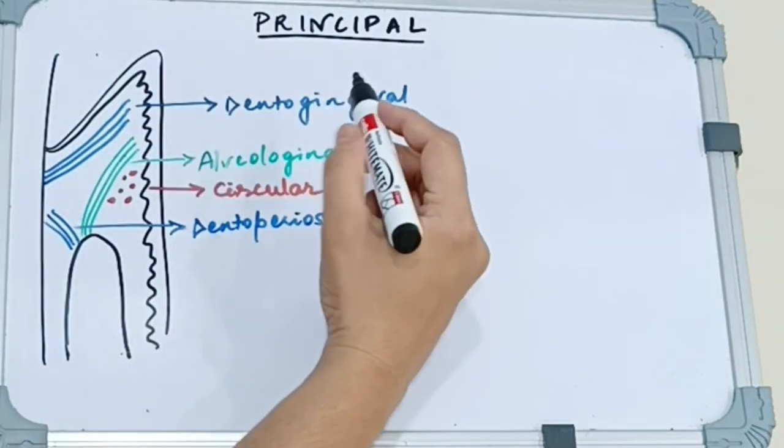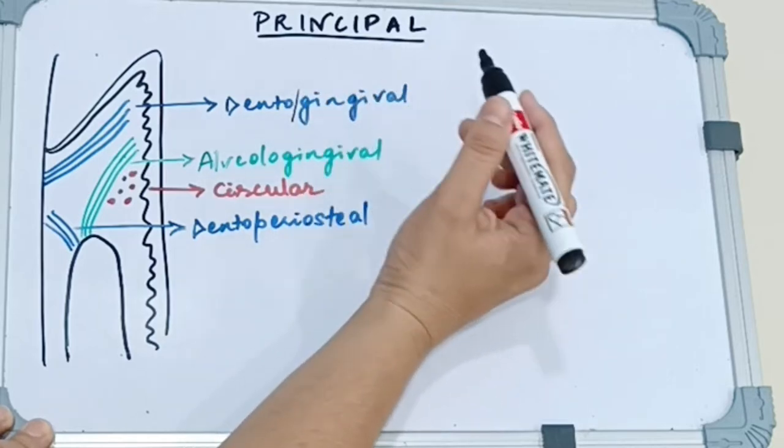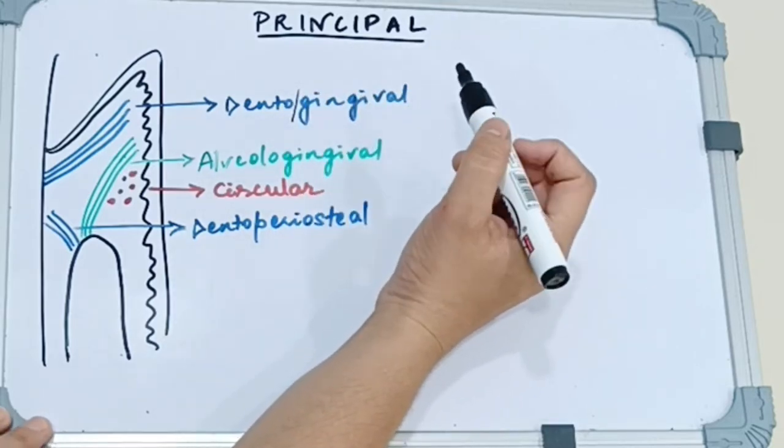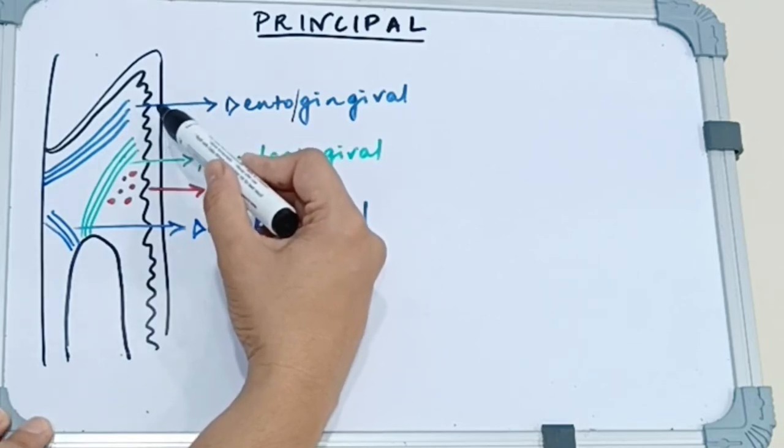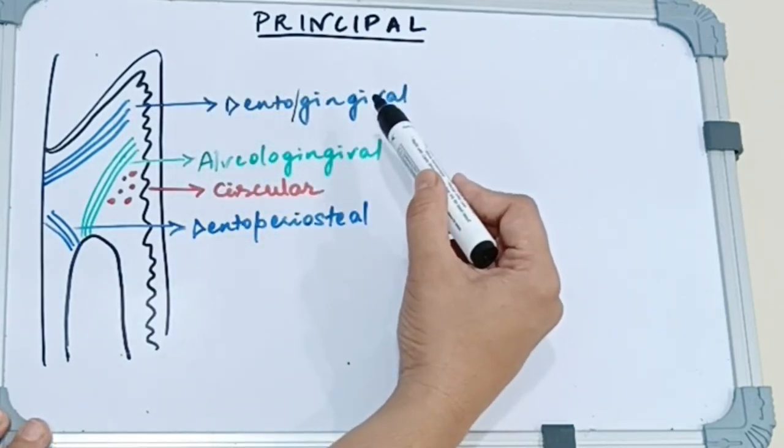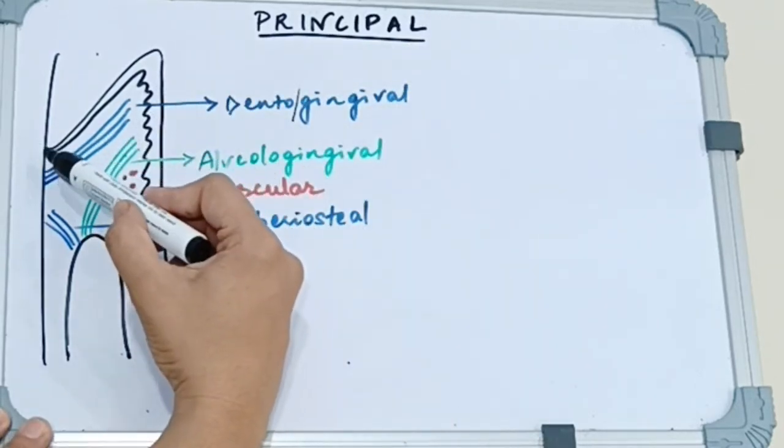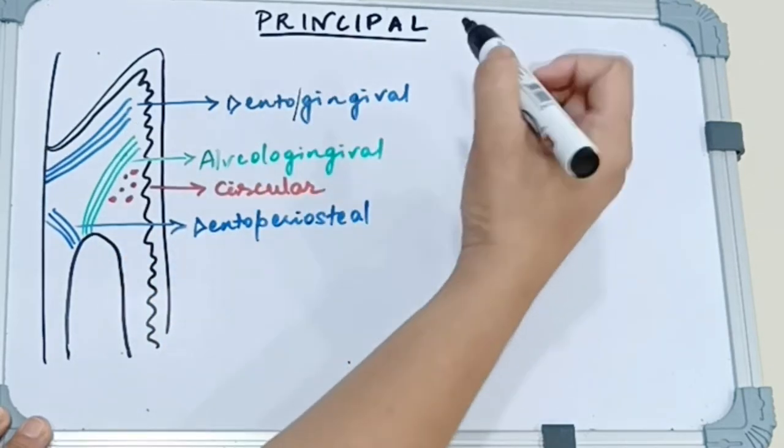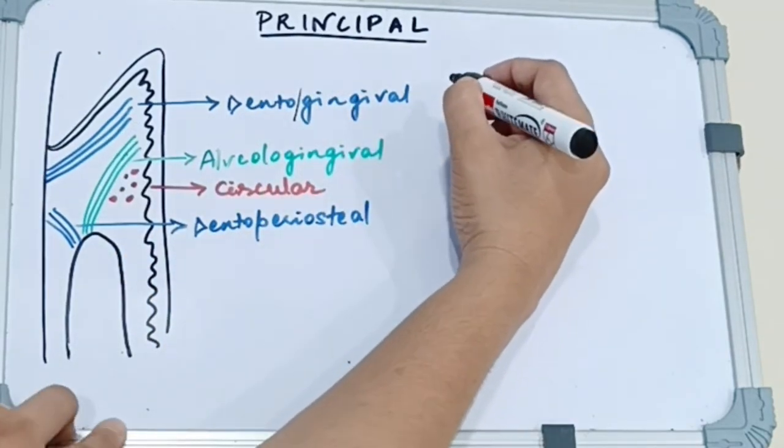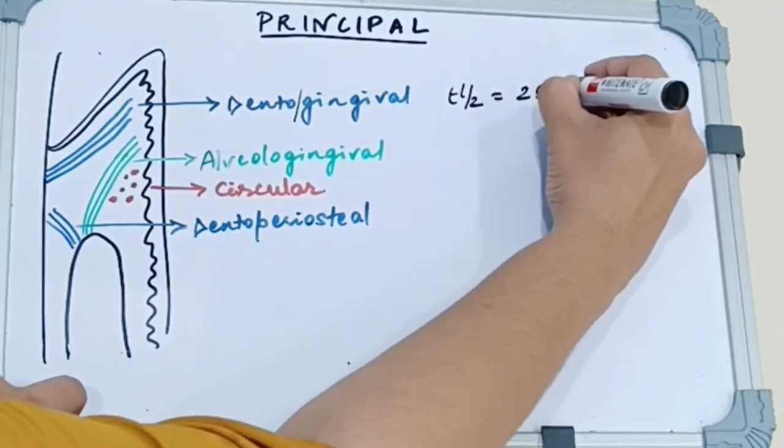So we first have the dentogingival. As the name suggests, these fibers provide a connection between the tooth and the gingiva. They are present on the buccal and the lingual and proximal surface and they are embedded in the cementum just beneath the epithelium at the base of the sulcus. So what they do is they provide support to the gingiva and they have a half life of around 25 days.